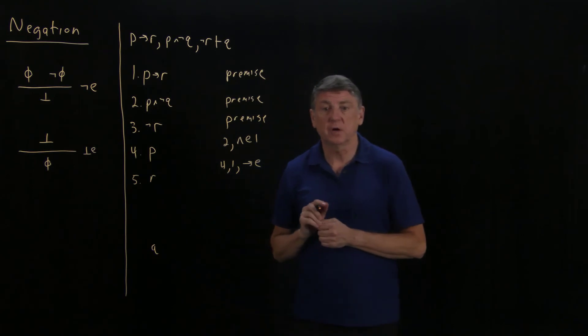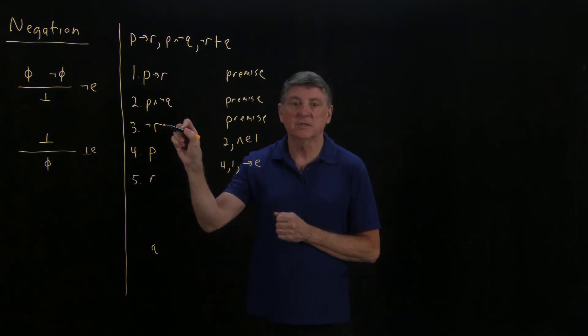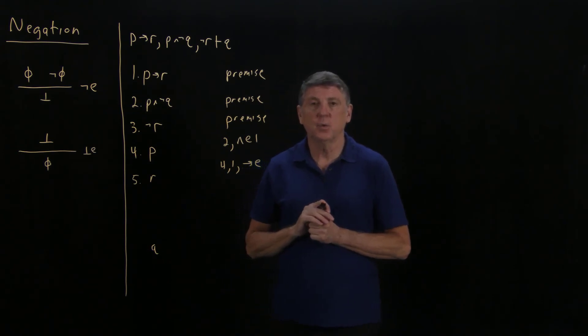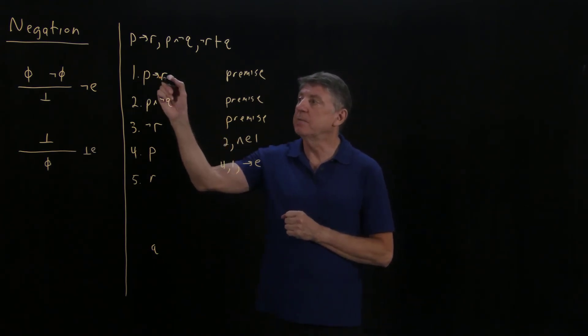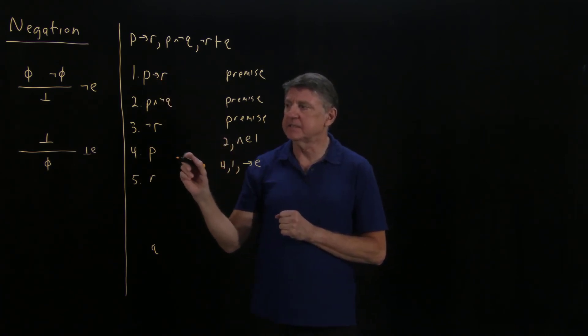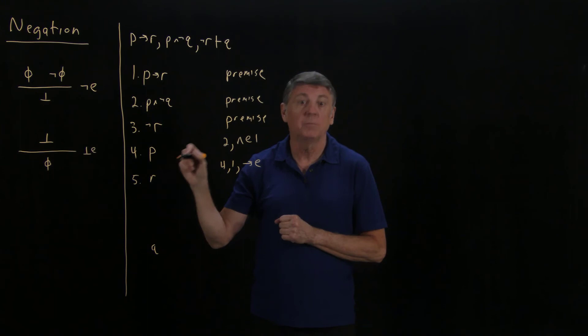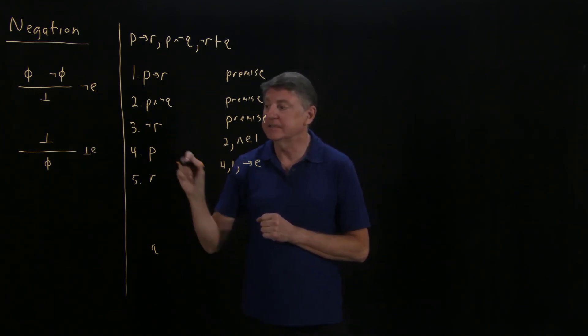Now I seem to have got somewhere, because I now have R as a formula on one line, and I have not R as a formula on another line. And so I can see this is where there's something seriously wrong with these premises. These premises have hidden inside this inconsistency, because I'm able to deduce not R, that is, it's a premise, and I'm able to deduce R by applying some fairly simple reasoning, and those are inconsistent.